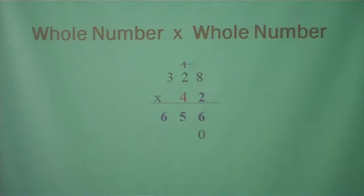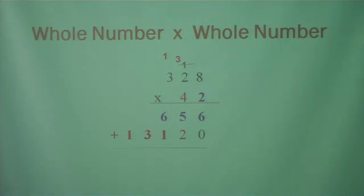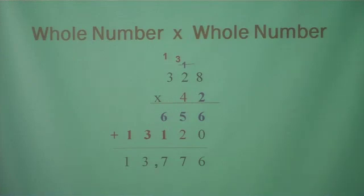We're going to put down our place value marker because now we're going to multiply by the 10 spot. 4 times 8 is 32 — put down your 2 and carry your 3. 4 times 2 is 8 plus 3 is 11 — put down your 1 and carry your 1. 4 times 3 is 12 plus 1 is 13. Now add: 6 plus 0 is 6, 5 plus 2 is 7, 6 plus 1 is 7, drop your 3 and your 1. Place your comma and your answer is 13,776.